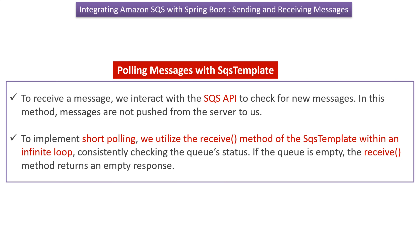Now we will see how to poll messages using SQS template. To receive messages, we interact with the SQS API to check for new messages. In this method, messages are not pushed from the server — we are polling messages from the server. To implement short polling, we utilize the receive method of the SQS template within an infinite loop, consistently checking the queue status. If the queue is empty, the receive method returns an empty response.